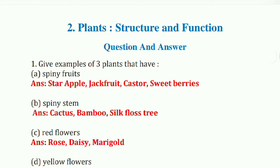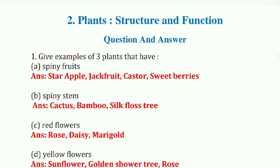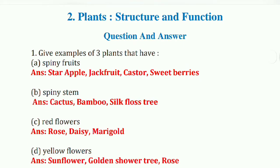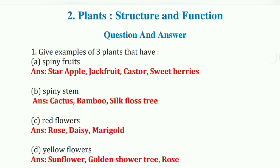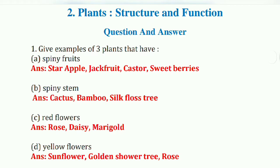Let's start with the question and answer. First question: give examples of three plants that have spiny fruits. Answer: spiny fruits — star apple, jackfruit, castor, and sweet berries. Second: spiny stems — cactus, bamboo, and silk floss trees.